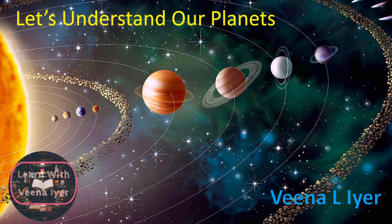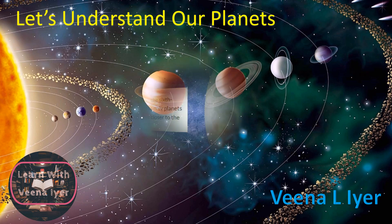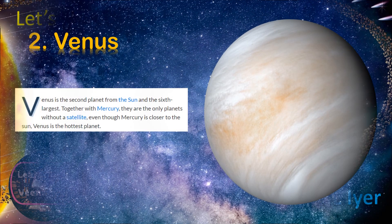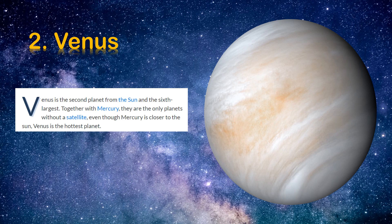Venus is the second planet from the sun and the sixth largest. Together with Mercury, they are the only planets without a satellite. Even though Mercury is closer to the sun, Venus is the hottest planet.